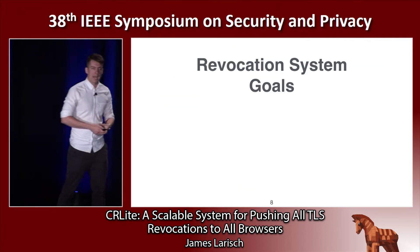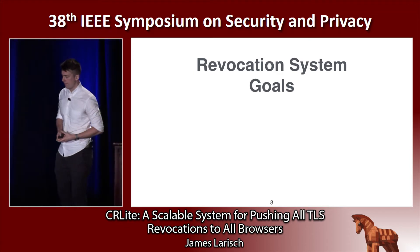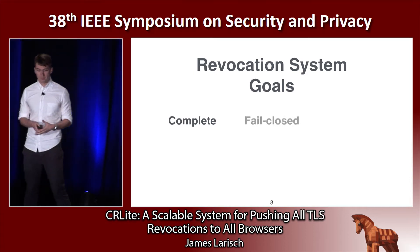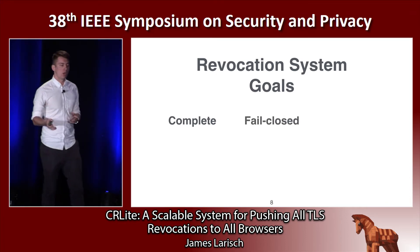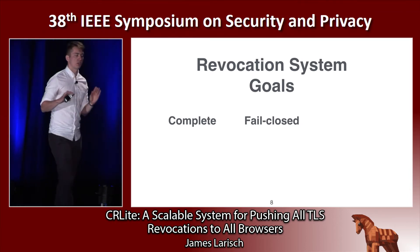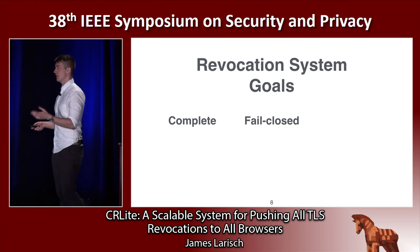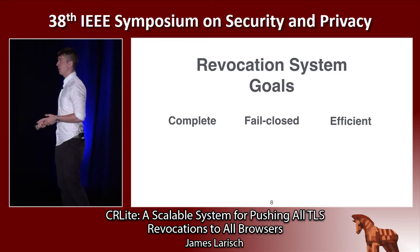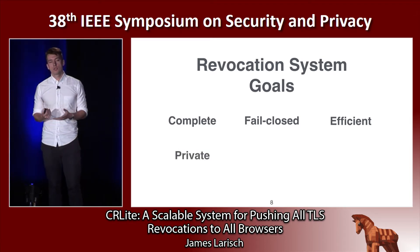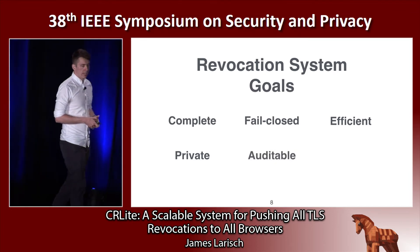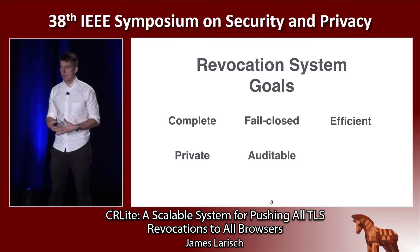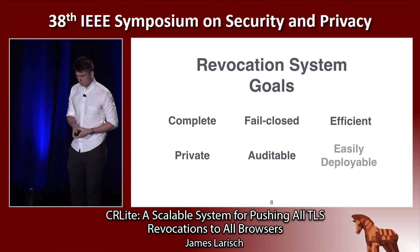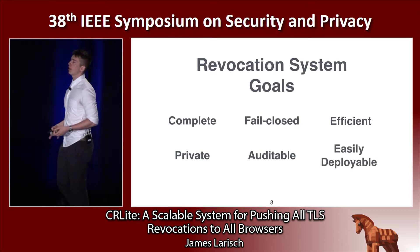Let's take a step back and examine what we would like out of a revocation system. Obviously, we want clients to have access to all revoked certificates in the TLS space. Currently, if an attacker blocks the OCSP or CRL response, a browser assumes the best and allows the user through. We would like our system to adopt a fail-closed security posture. Browsers shouldn't have to sacrifice efficiency for security, and they also shouldn't have to sacrifice their privacy. Our ideal system would be auditable, and the solution should be easily or at least incrementally deployable.